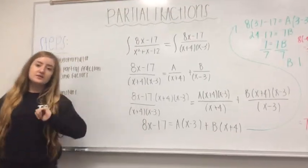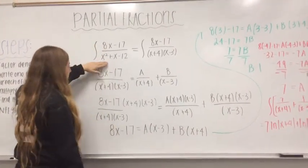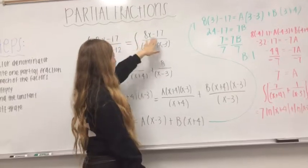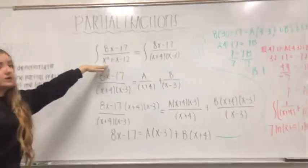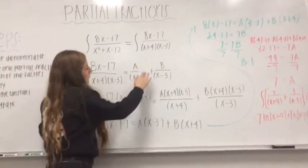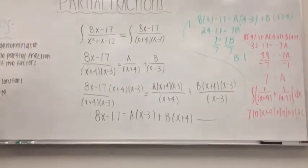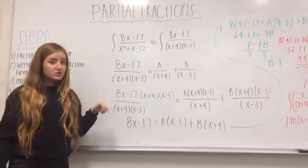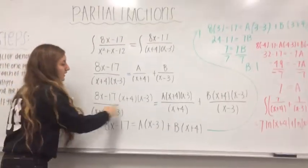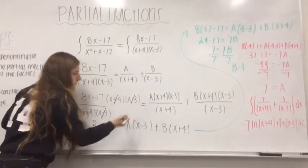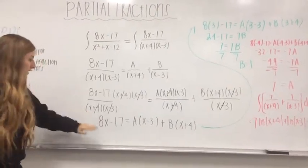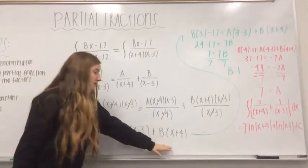Here's another problem similar to the previous one, just to review. It's the integral of 8x minus 17 over x squared plus x minus 12. The first step is to factor the denominator, which comes out to x plus 4 times x minus 3. The second step is to write one partial fraction for each factor: A over x plus 4 plus B over x minus 3. Then we multiply by the denominator to cancel the fractions, leaving us with: 8x minus 17 equals A times x minus 3 plus B times x plus 4.